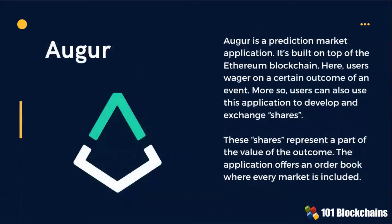Augur is a prediction market application built on top of the Ethereum blockchain. Users can use this application to develop and exchange shares, where shares represent a value of the outcome.